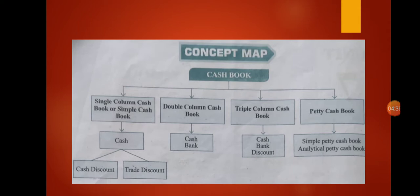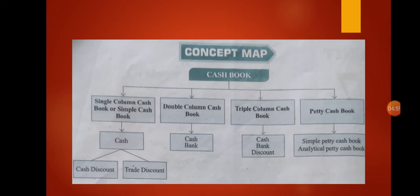The next type of cash book is triple column cash book, otherwise known as three column cash book. A three column cash book includes three amount columns on both sides: cash, discount, and bank column. This cash book is prepared in the same way as simple and double column cash books. All transactions which decrease bank balance are recorded in the bank column on the credit side.